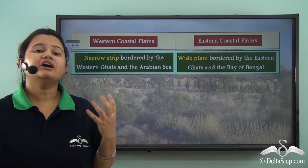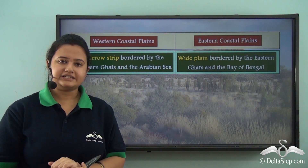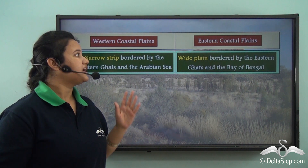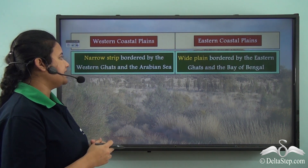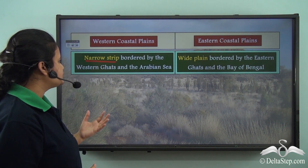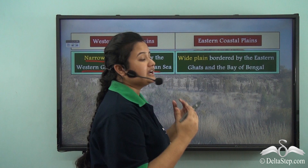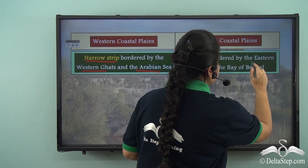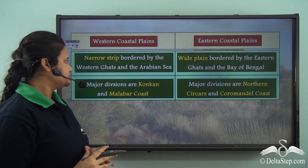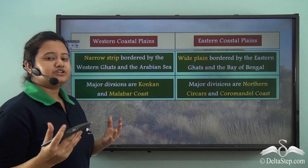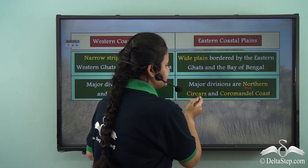The coastal plain is a major physiographic division of India that forms the margin of peninsular India and can be divided into two parts: western coastal plain and eastern coastal plain. The western coastal plain is a narrow strip bordered by the Western Ghats on one side and the Arabian Sea on the other, whereas the eastern coastal plain is comparatively wider and bordered by the Eastern Ghats on one side and the Bay of Bengal on the other. The western coastal plain is divided into Konkan coast and Malabar coast, while the eastern coastal plain is divided into Northern Sirkas and Coromandal Coast.